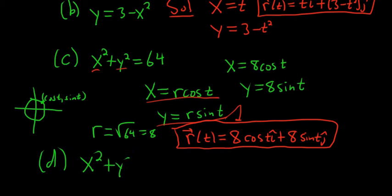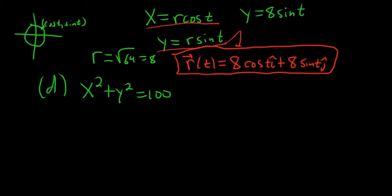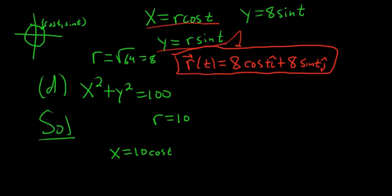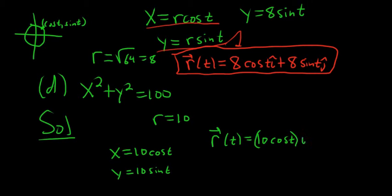Let's do another one. Part d: x squared plus y squared equals 100. Again we have a circle centered at the origin. Here r equals 10, the square root of 100. Using our formula: x equals 10 cosine t and y equals 10 sine t. So r(t) equals (10 cosine t) i-hat plus (10 sine t) j-hat.